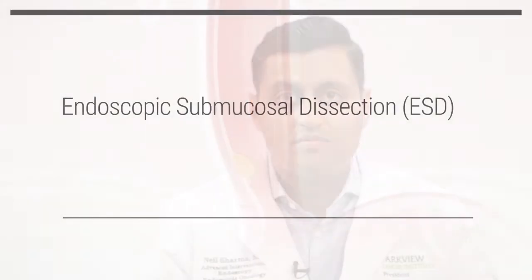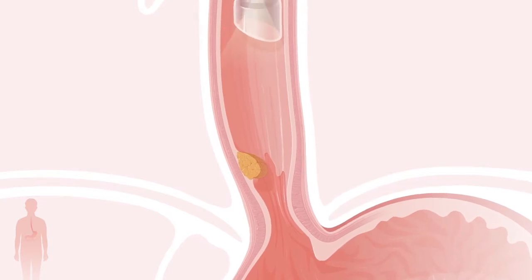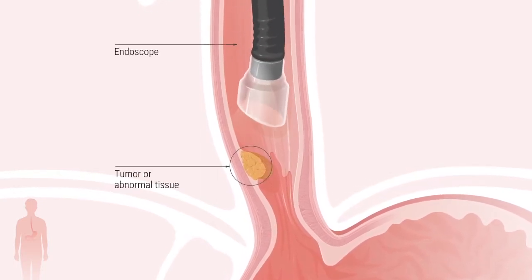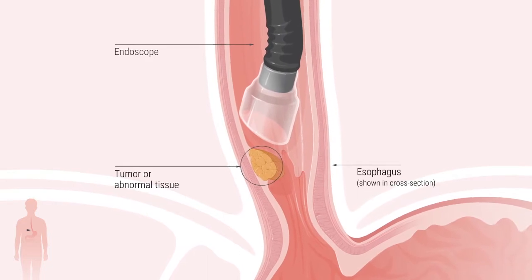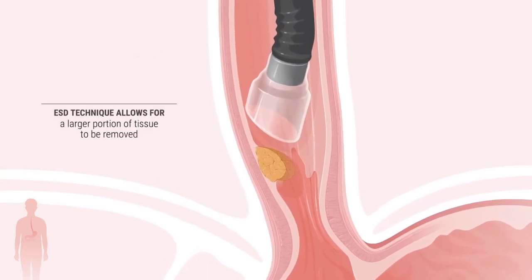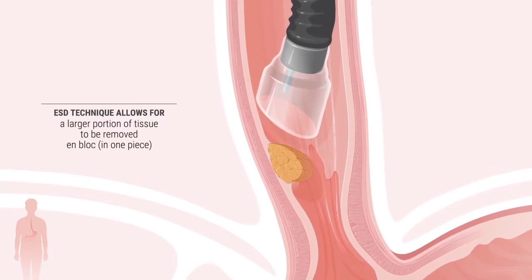In the following animation, we describe a technique for the resection or removal of abnormal tissue through the endoscope. Endoscopic submucosal dissection is a complex procedure where a doctor uses an endoscope to remove a tumor or other abnormal tissue in the lower esophagus. This technique allows for a larger portion of tissue to be removed en bloc, or in one piece.